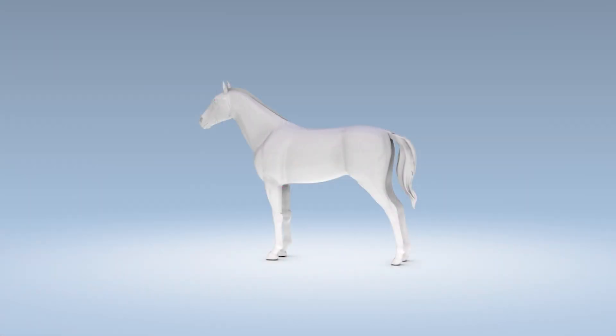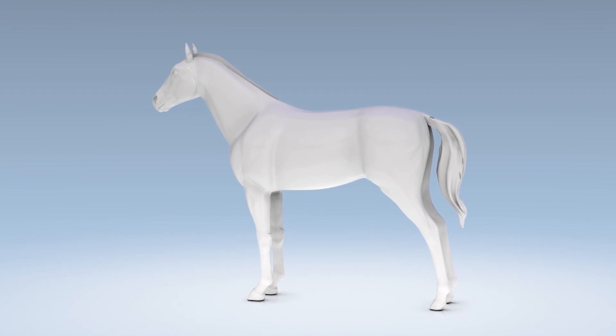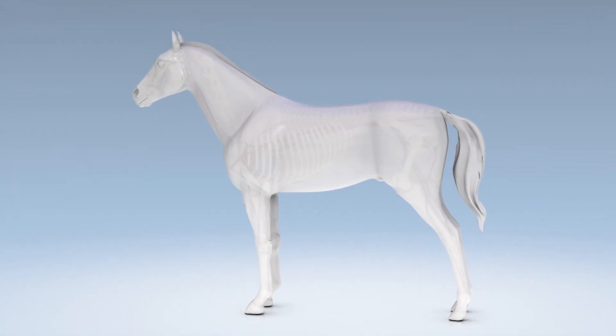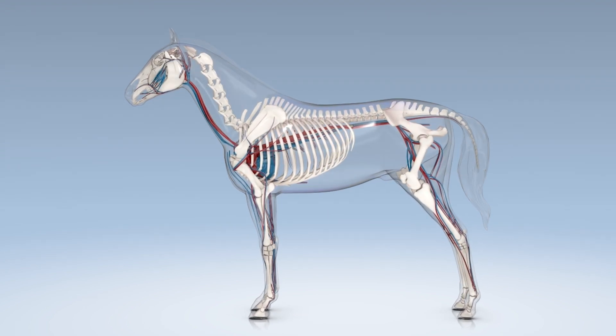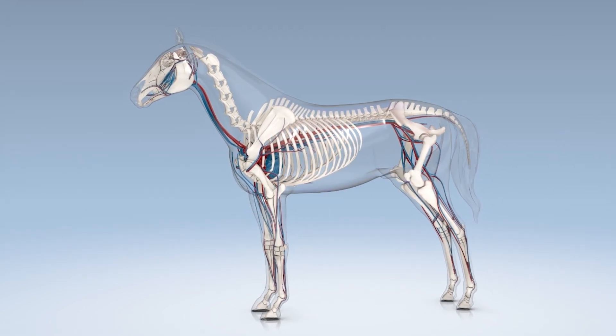Pituitary Pars Intermediate Dysfunction, PPID, formerly known as Equine Cushing's Disease, is the most common endocrinologic disorder in horses. Horses as young as five years of age have been diagnosed with PPID.